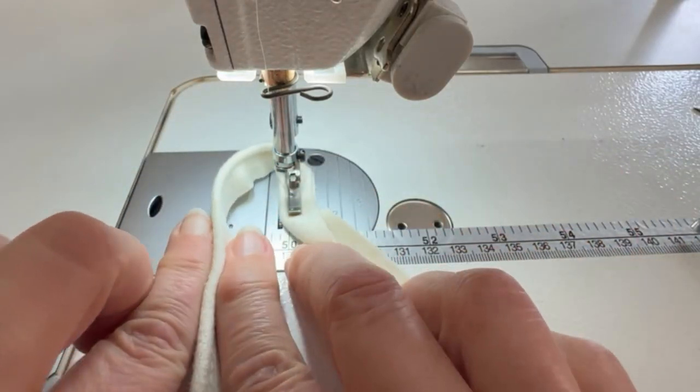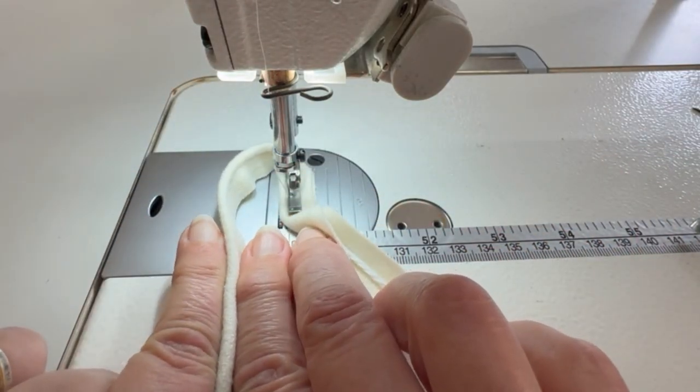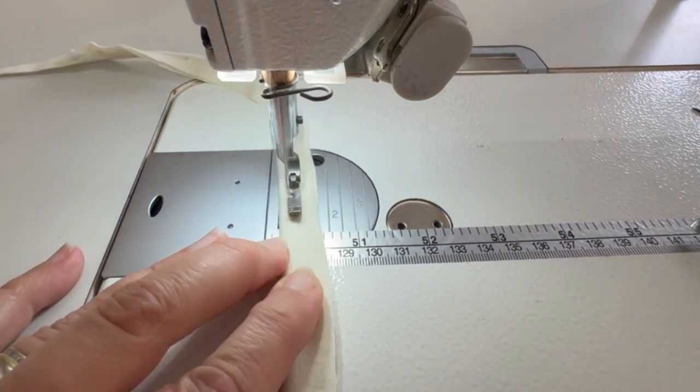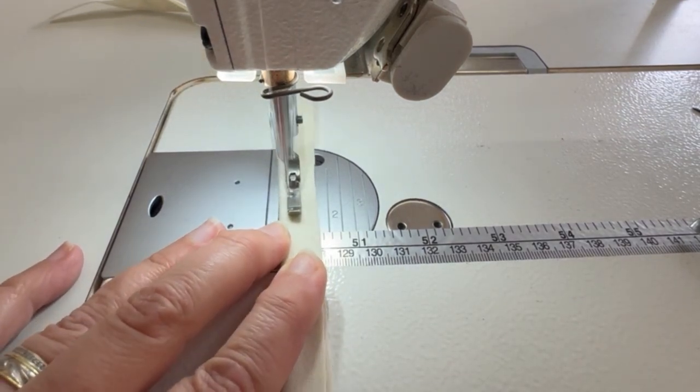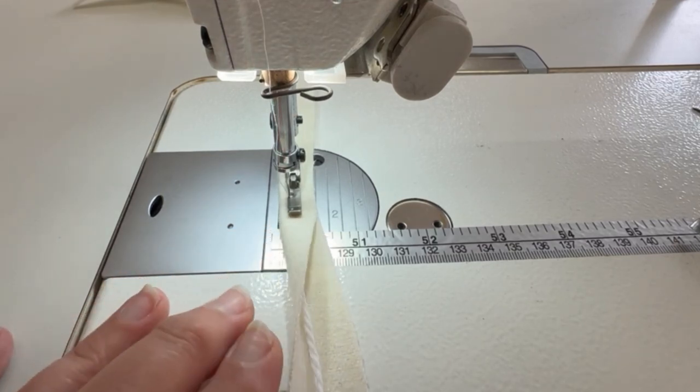Then you can sandwich that between two pieces of fabric, and that's how you get your piped edge. Obviously once you've finished sewing, finished doing your piping, you can change your foot back.